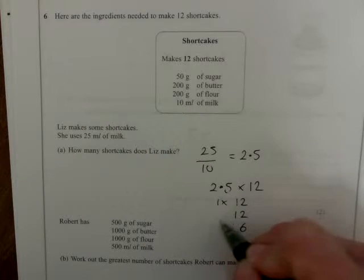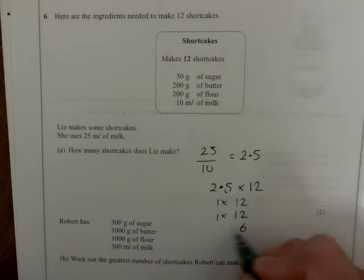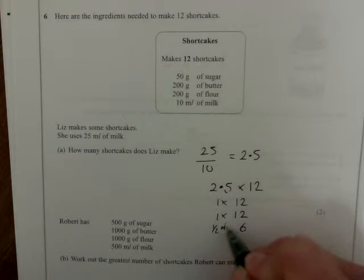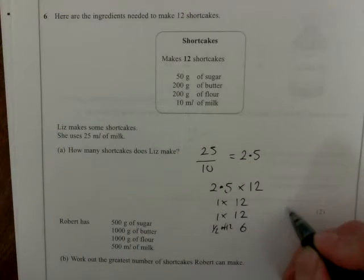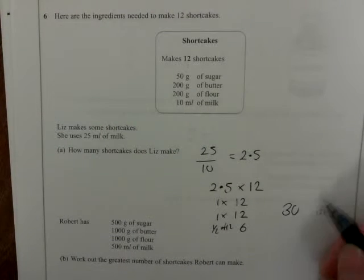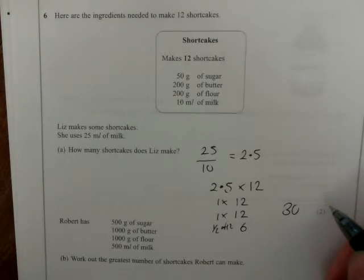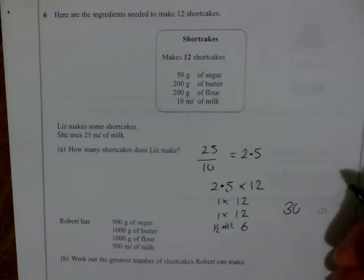So, that's 1 times 12, 1 times 12, and this is a half of 12. And that's my 2.5, and that comes to 30. So, she can make 30 cakes. And that will get us 2 marks.